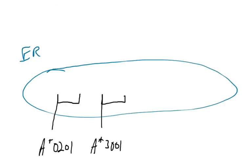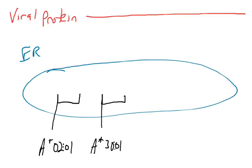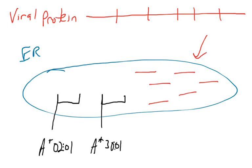Let's go back to our endoplasmic reticulum. Before I showed just one MHC class 1 allotype, A0201. Now I'm showing both, because we make two different ones, assuming we have two different alleles. So again, say the cell is infected by a virus. We want the virus's proteins to be processed — chopped up by the proteasome into small peptides, transported into the ER. We know HLA-A0201 binds peptides with anchor residues leucine and valine, and now we have a second allotype, A3001, which binds peptides with anchor residues phenylalanine at positions 2 and 9.